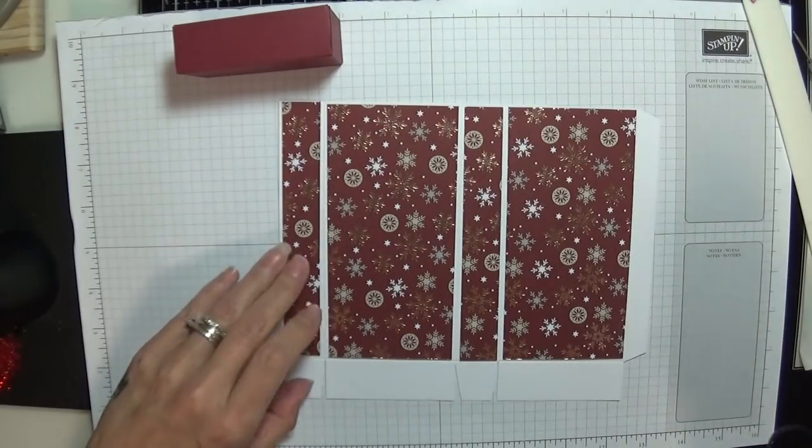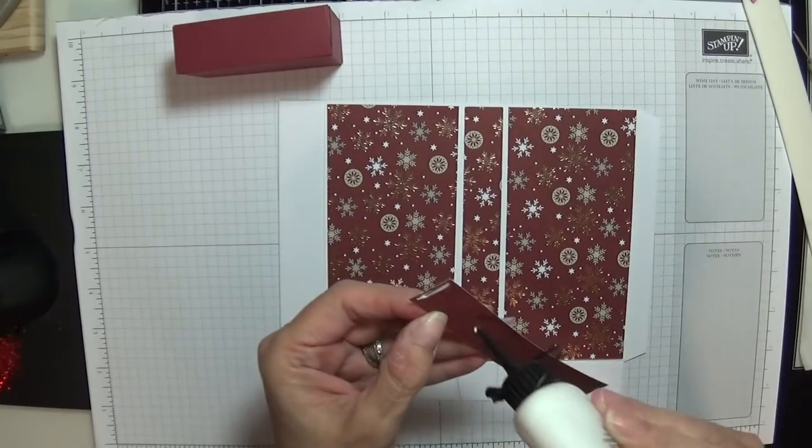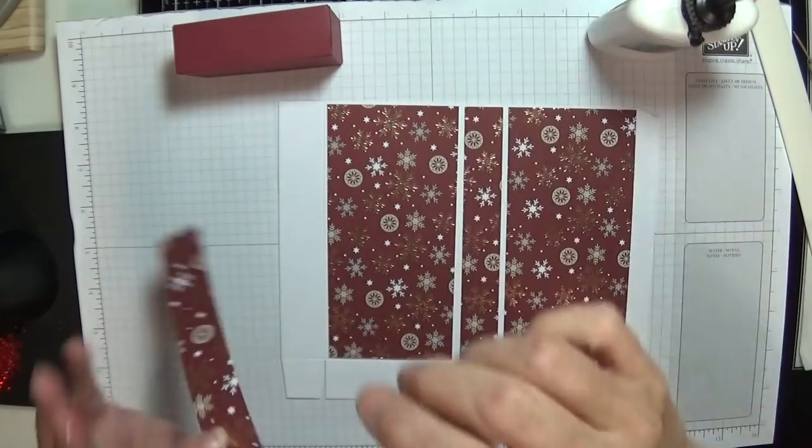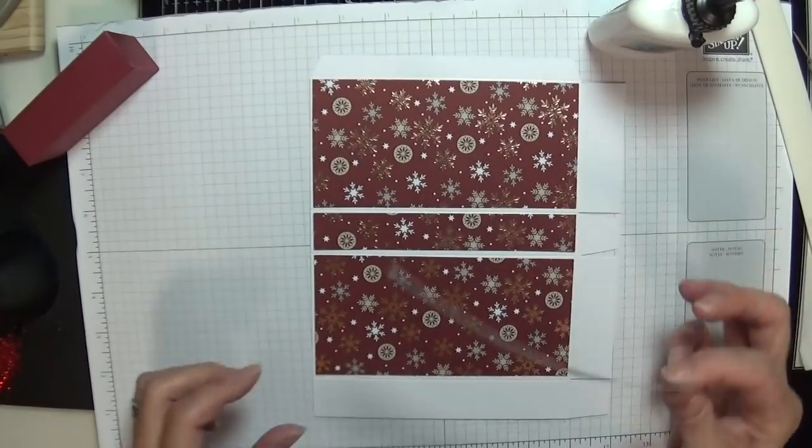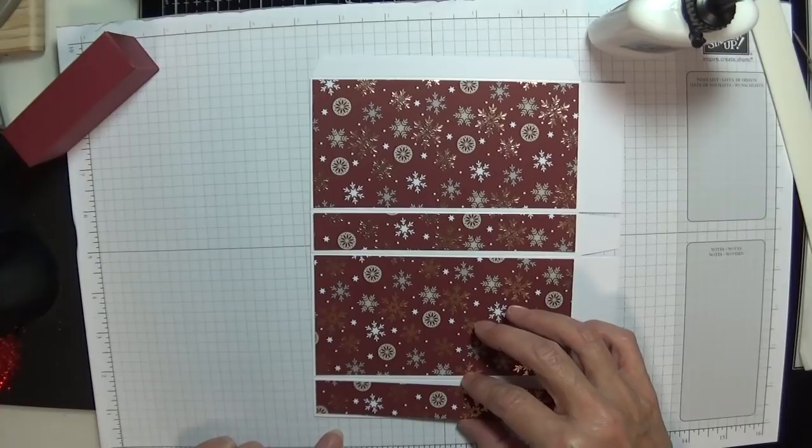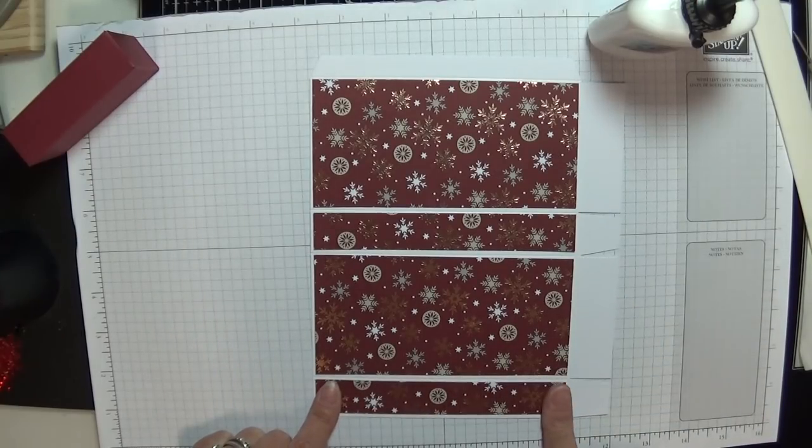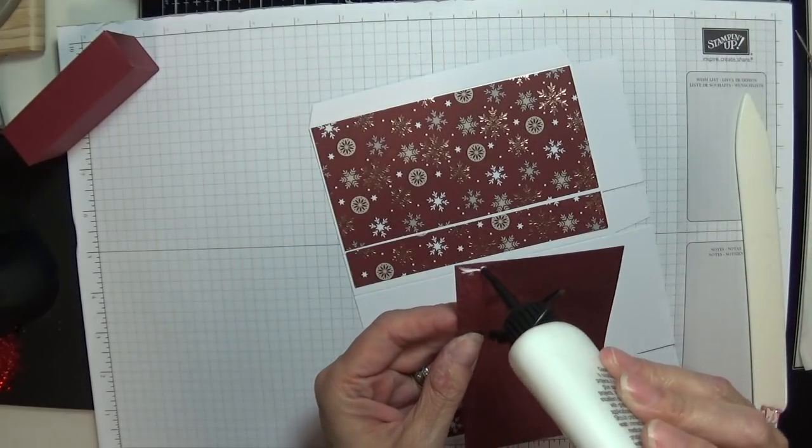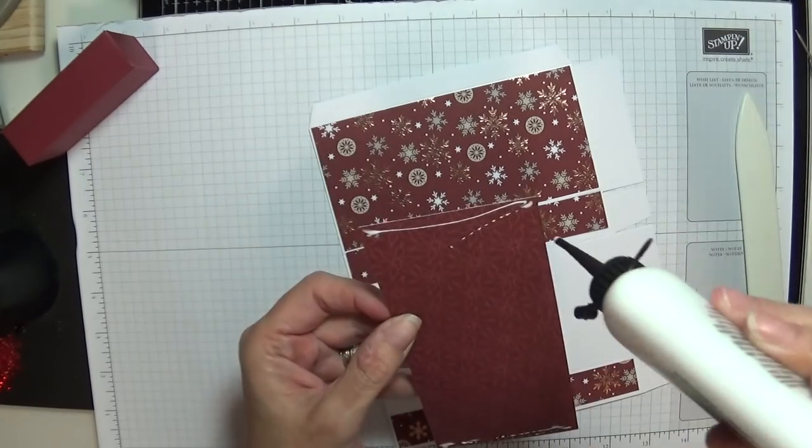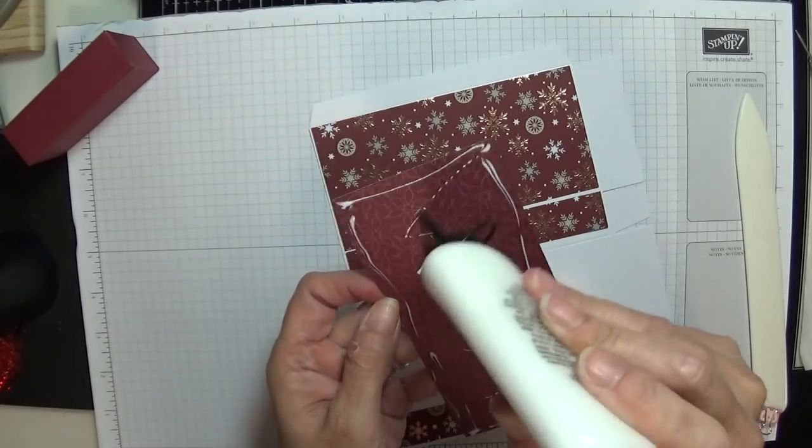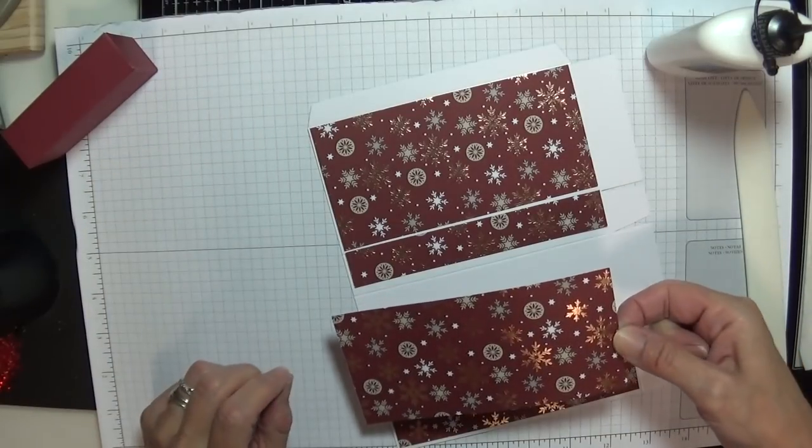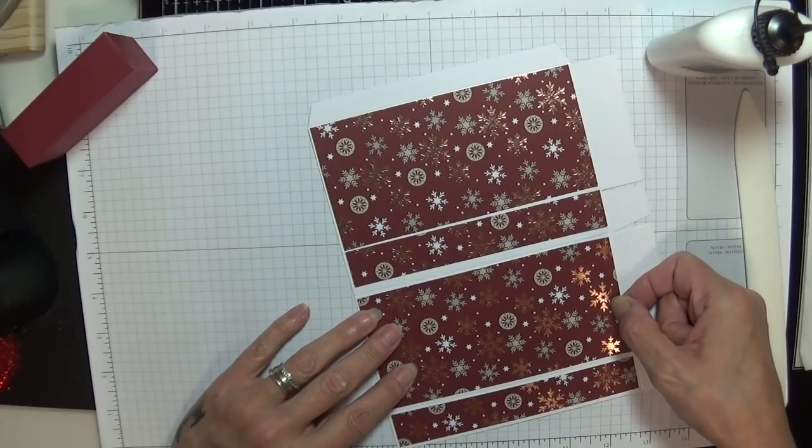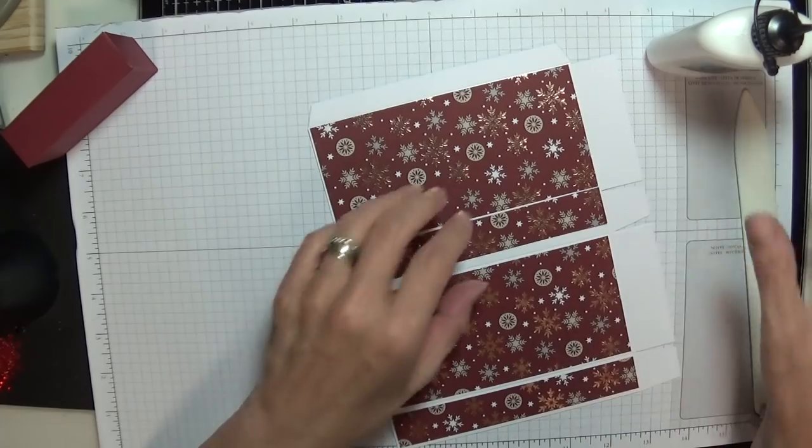We are going to glue those on now using my Cosmic Shimmer glue because I love it. A tiny little bit - you literally just need more or less on the ends than anything else. I am not squeezing the bottle, I am just putting it down. I just line this up, we've got ever such a small border which I love. That's it, that's dry believe it or not.